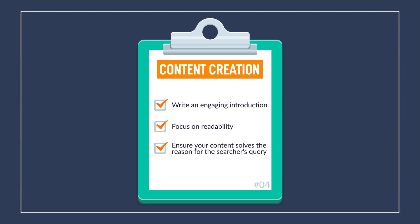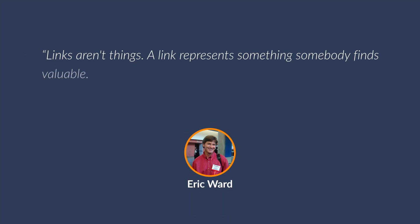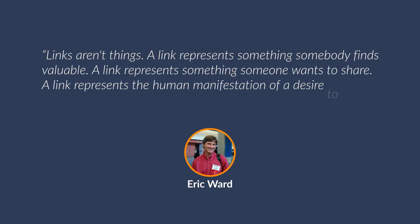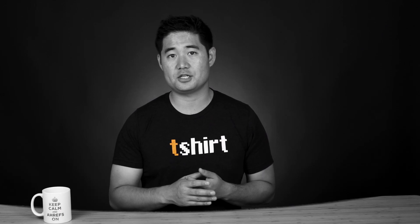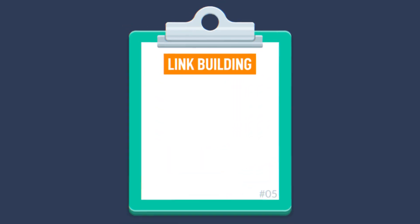Take a screenshot and let's move on to the next section, which is all about link building. When it comes to white hat link building, you'll have to do some email outreach. Outreach isn't about begging for links. In the words of the late Eric Ward: 'Links aren't things. A link represents something somebody finds valuable, something someone wants to share, the human manifestation of a desire to let someone else know about something useful.' The first thing you can do is look at who's linking to the top ranking pages for your target keyword — these will likely be the most relevant link prospects, seeing as they've already linked to a competing article on the same topic.